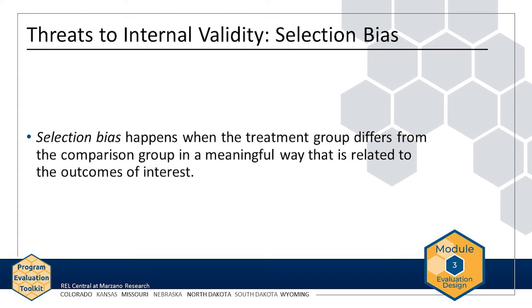Again, let's consider this threat in relation to the AMP example. Say that a different district rolls out a program similar to AMP and allows any of its six middle schools to participate. Three schools chose to implement the program, and the district wants to conduct an evaluation to compare the outcomes for those three schools to the outcomes for the three schools not implementing the program. This case represents a threat to internal validity due to selection bias.